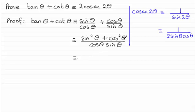Now, I should be able to recognise the top here of the fraction. It's a well-known identity. Sine squared of an angle plus cos squared of the same angle is always one. So, I've got one then over cosine theta, sine theta.